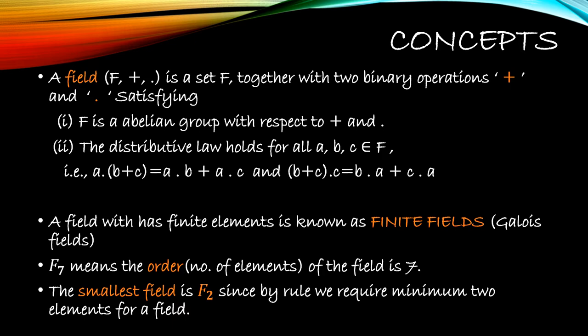The second condition: the distributive law holds for all A, B, C which belong to F. Dot is distributive over plus. So A·(B+C) = A·B + A·C. These things you should have studied in discrete mathematics. And (B+C)·C = B·C from the right distributive law, and left distributive law. So a field is a set F having two binary operations plus and dot satisfying two conditions: it should be an abelian group under both binary operations, and it should also satisfy the left and right distributive law.